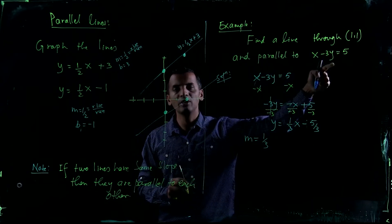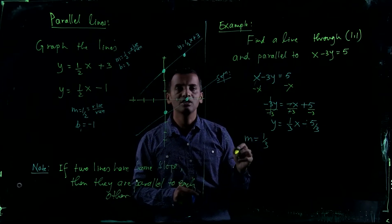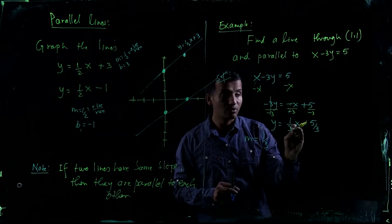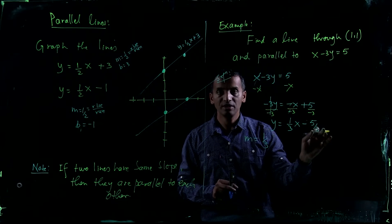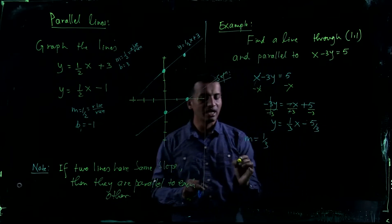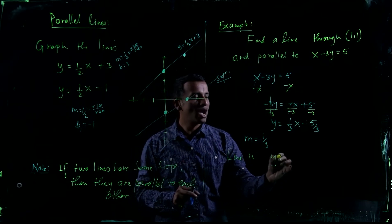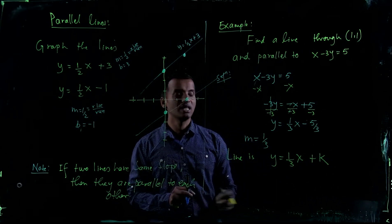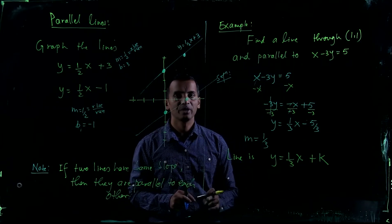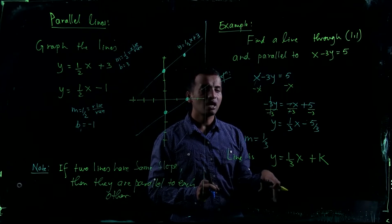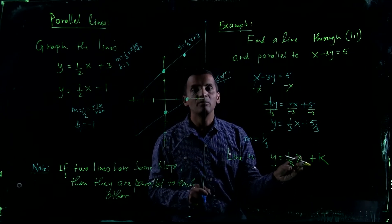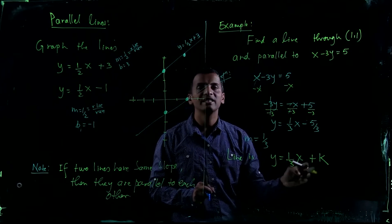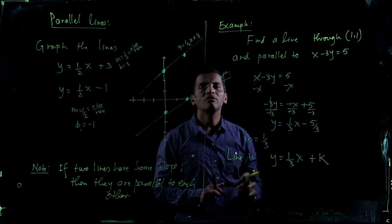The slope of the line parallel to this will also be one-third. The equation of the line you want to find will be y equals one-third x plus k, where k is the unknown constant. Since the line passes through (1, 1), plug in x equals 1 and y equals 1: you get 1 equals one-third plus k.